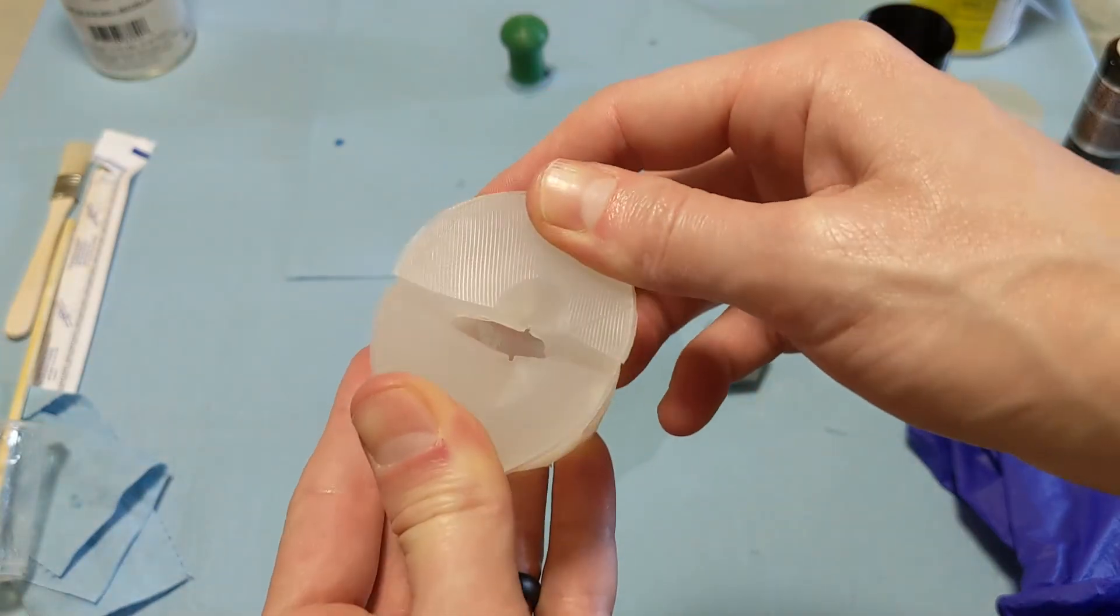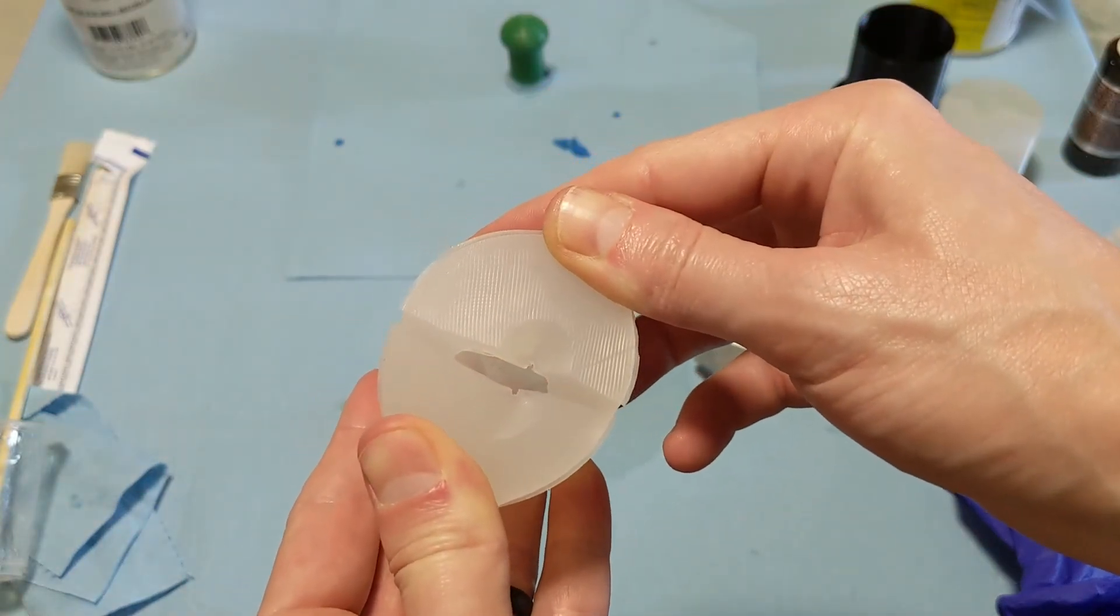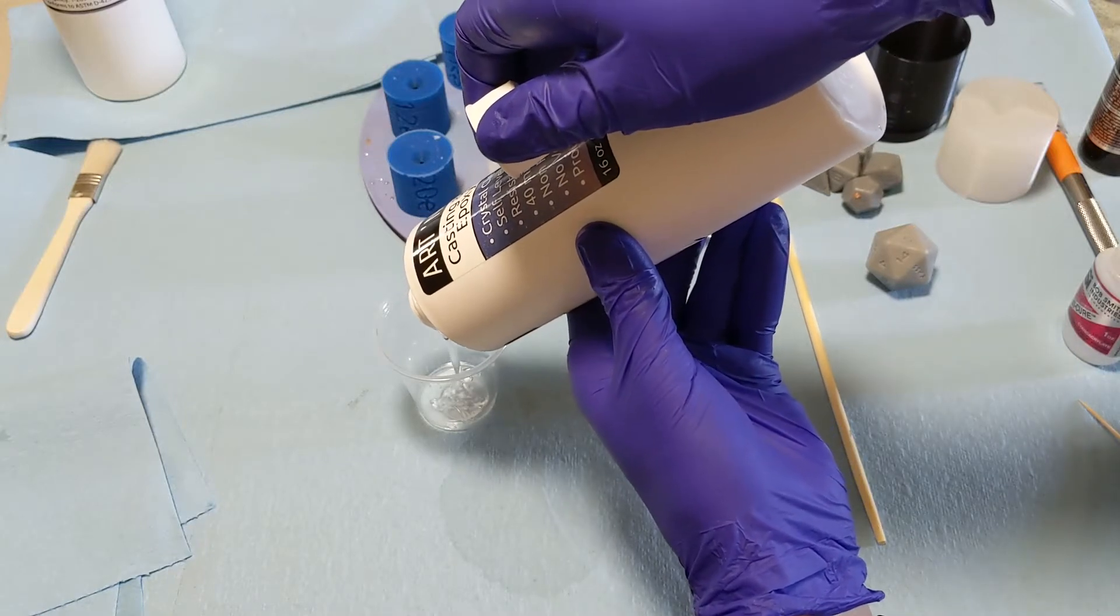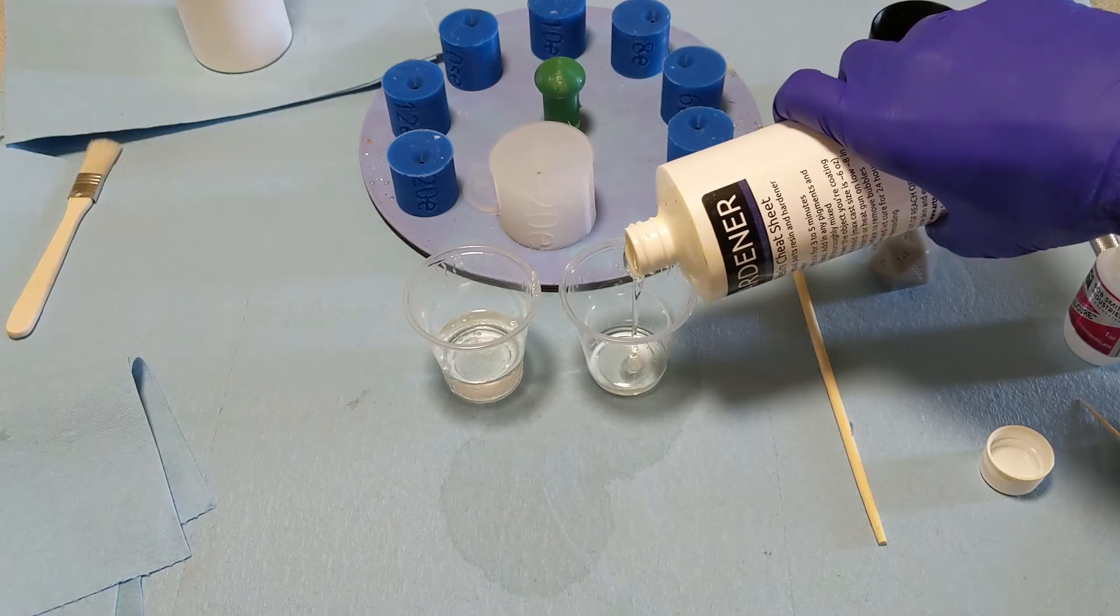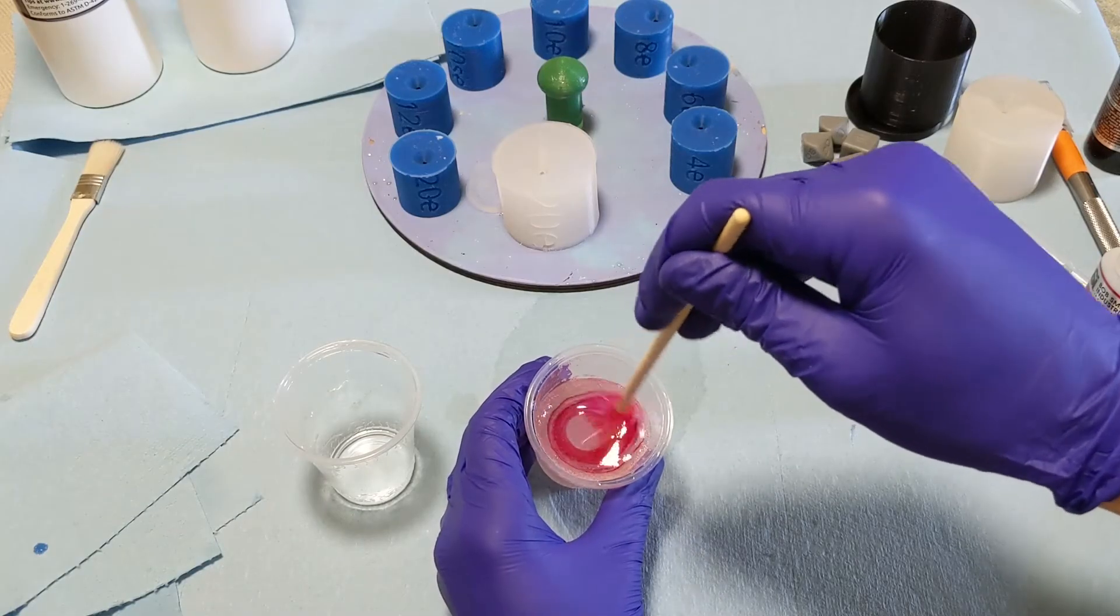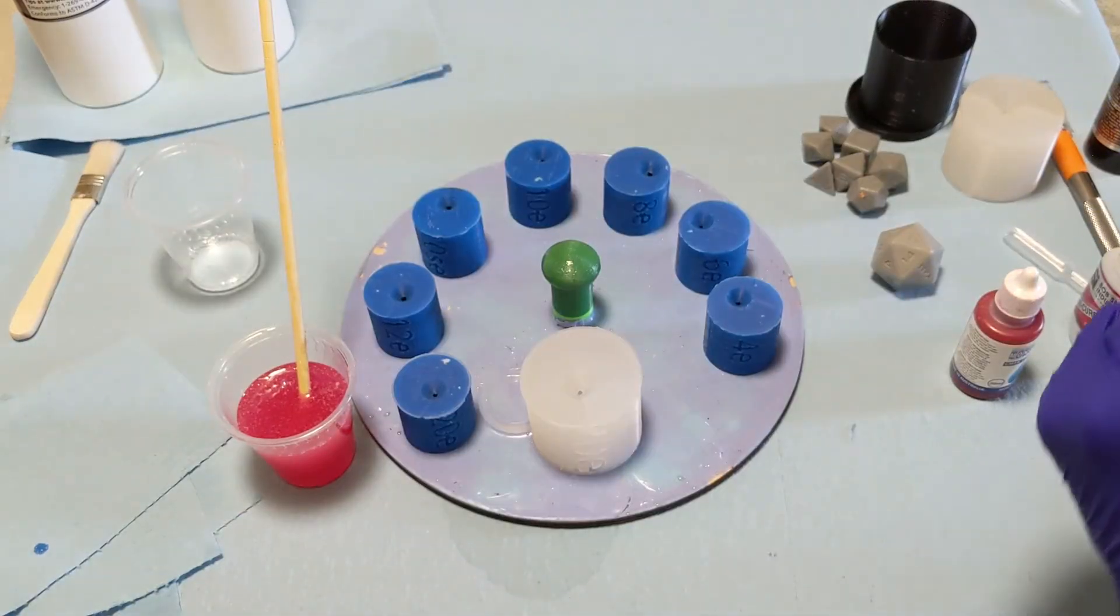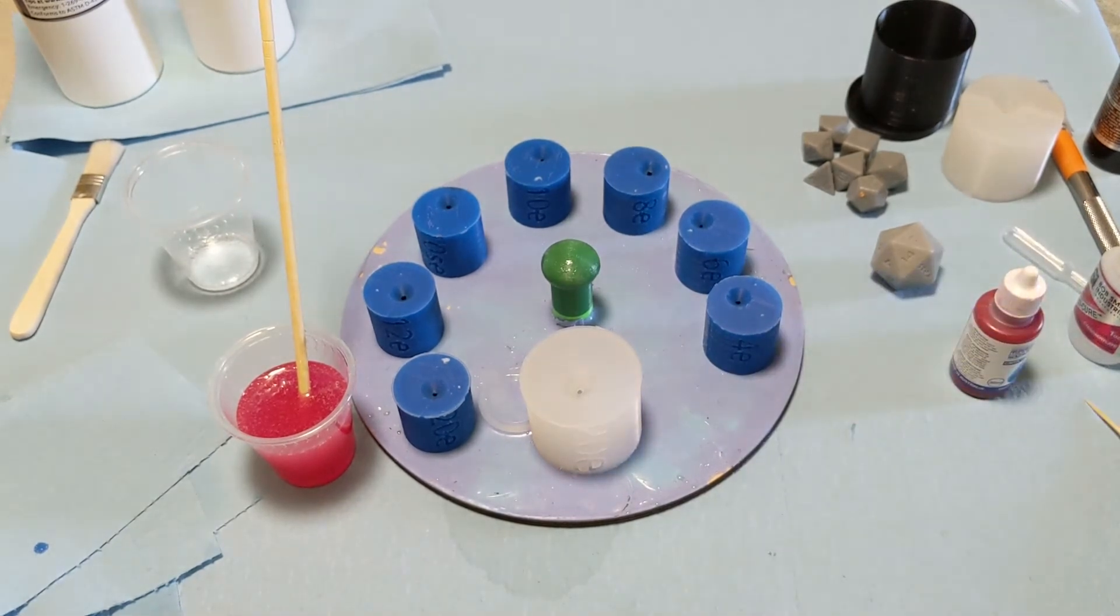Whenever doing masters, I like to do a translucent color. That way when it's cured, one, it's easy to see to cut it out, and two, it still has that glass-like look so that when you're sanding it, it's easier to get it exactly how you want it.